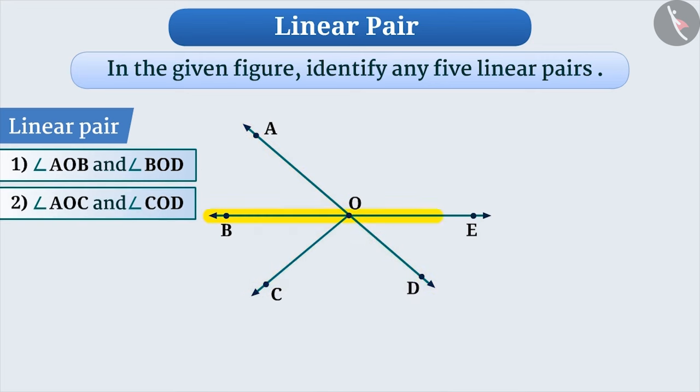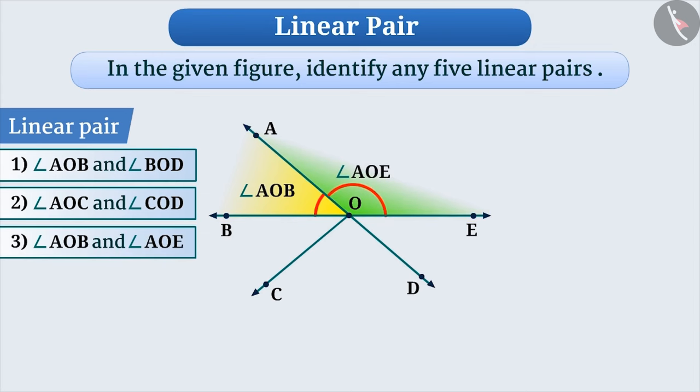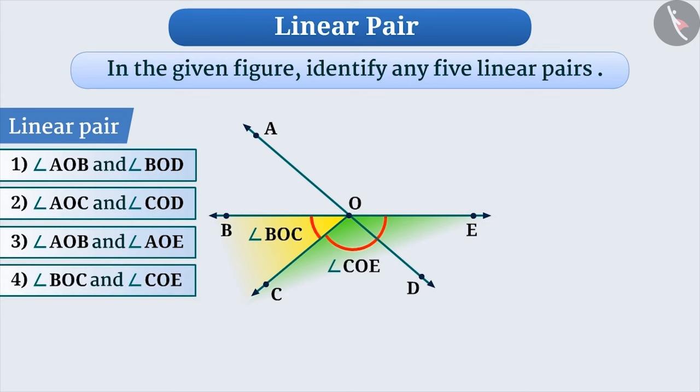If we talk about line BE with the ray OA on it, linear pair angle AOB and angle AOE is formed. Similarly, linear pair angle BOC and angle COE is formed with ray OC on BE.